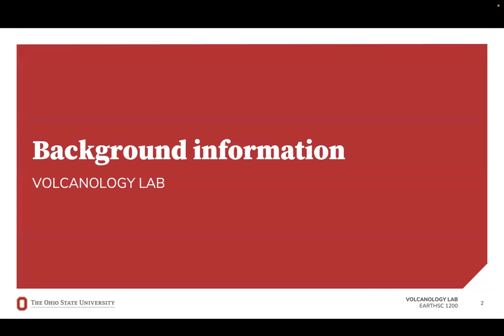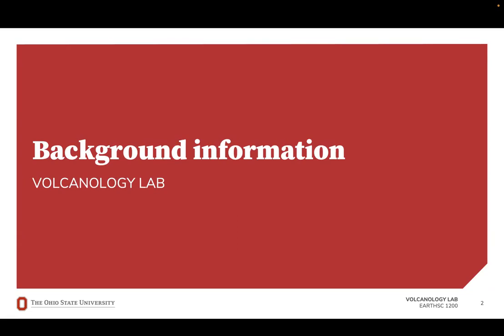First, we'll start with some background information to provide you context for this week's lab. A volcano can be defined as a vent in the crust of a planetary body or moon, from which eruptions of molten rock, hot rock fragments, and hot gases escape. Like we've talked about in previous labs, volcanism is related to plate tectonics. There are three types of volcanism, each one coming from a different tectonic setting: convergent boundary volcanism, divergent boundary volcanism, and hotspot volcanism.